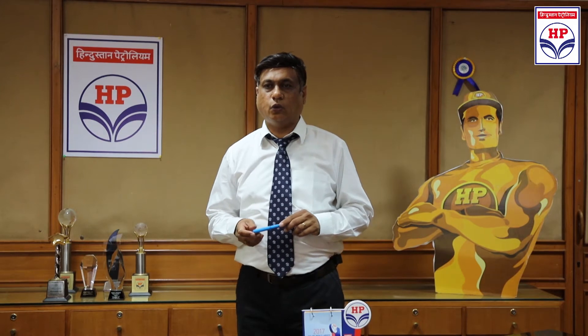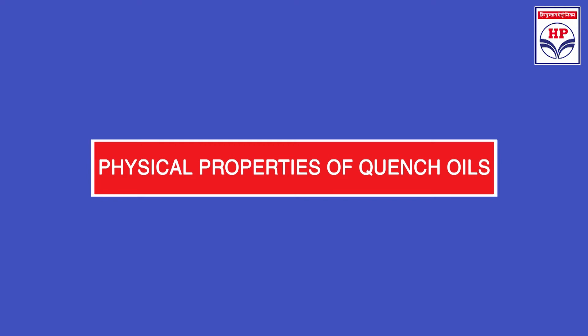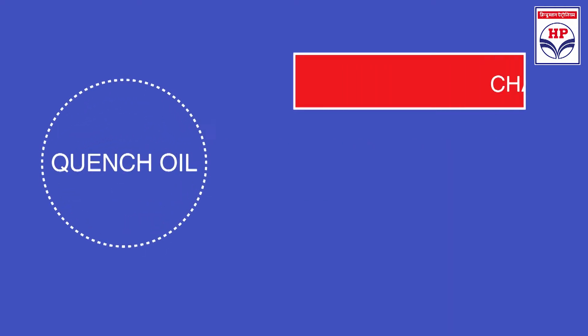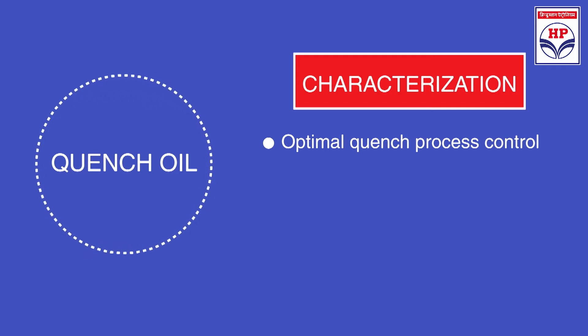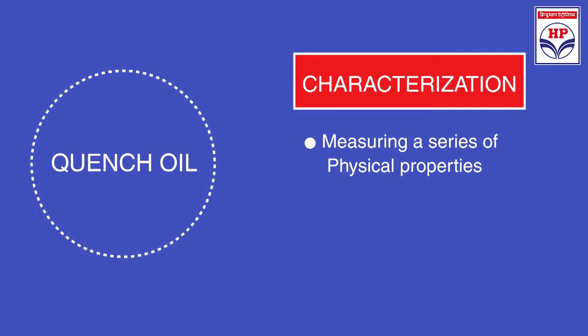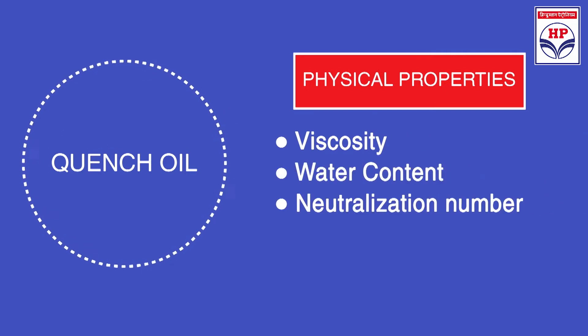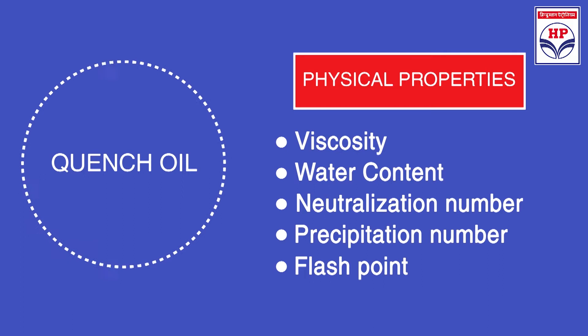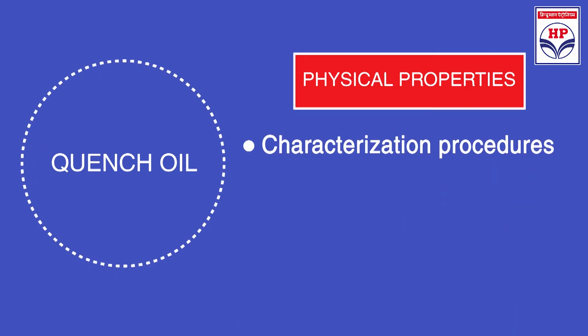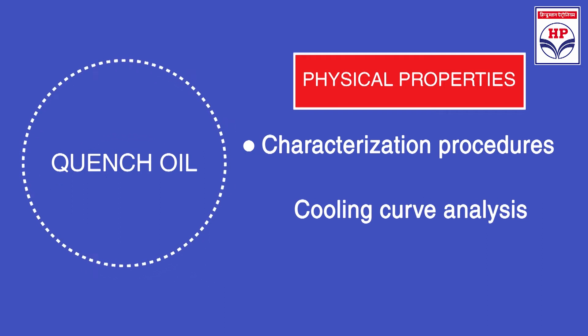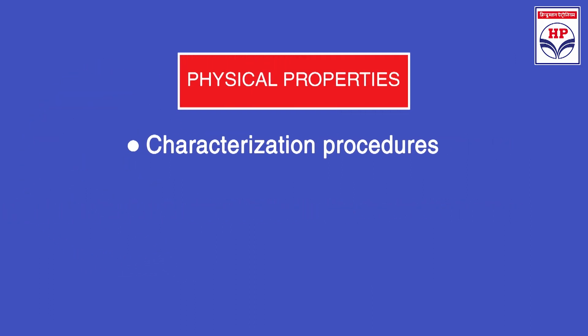To assure optimal quench process control, it is necessary to monitor quality variations throughout the oil's lifetime. This can be accomplished with a quench oil maintenance procedure. Quench oil characterization is necessary to ensure optimal quench process control. It is readily performed by measuring a series of physical properties including viscosity, water content, neutralization number, precipitation number, and flash point. In addition to physical property characterization procedures, cooling curve analysis should also be performed when needed. There are numerous specific physical property characterization procedures that may be used when evaluating quench oils.